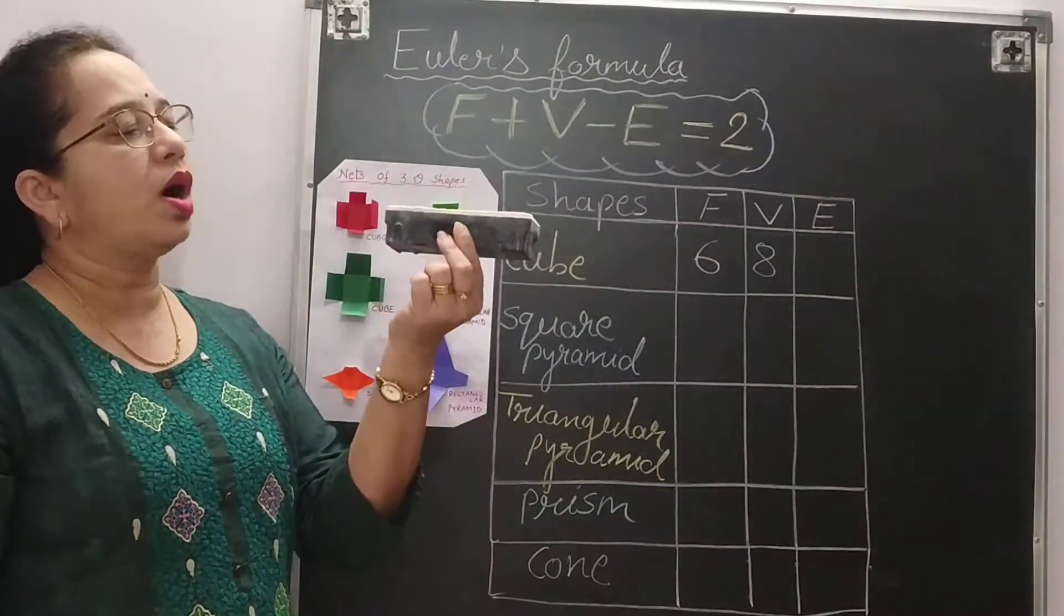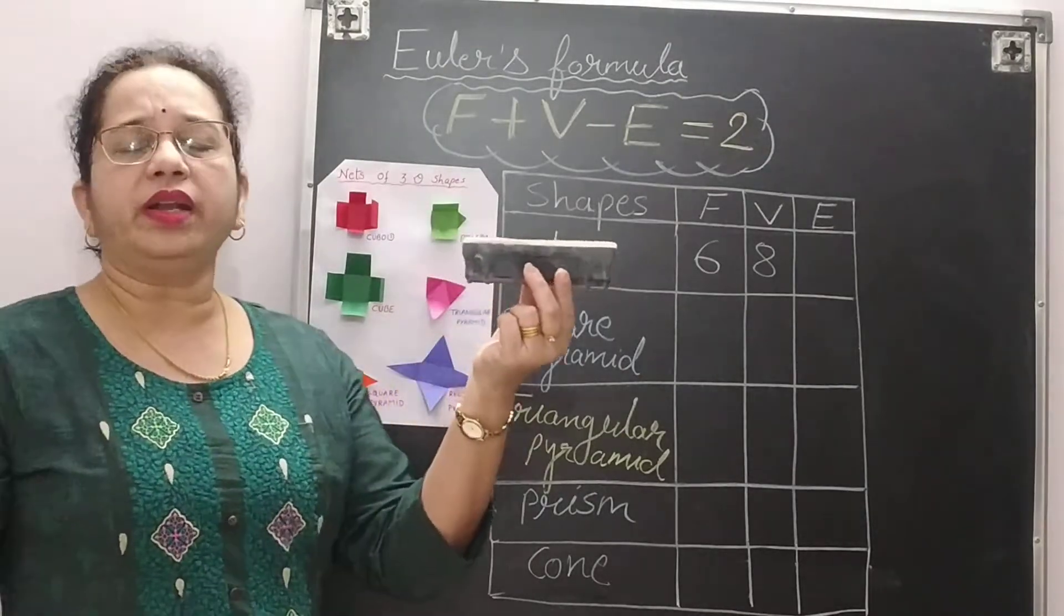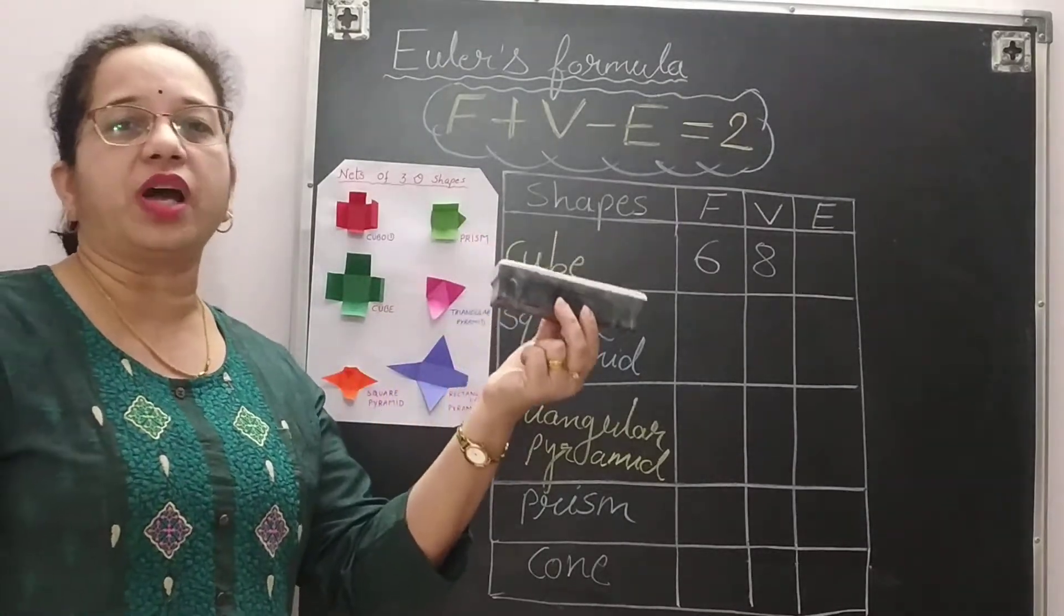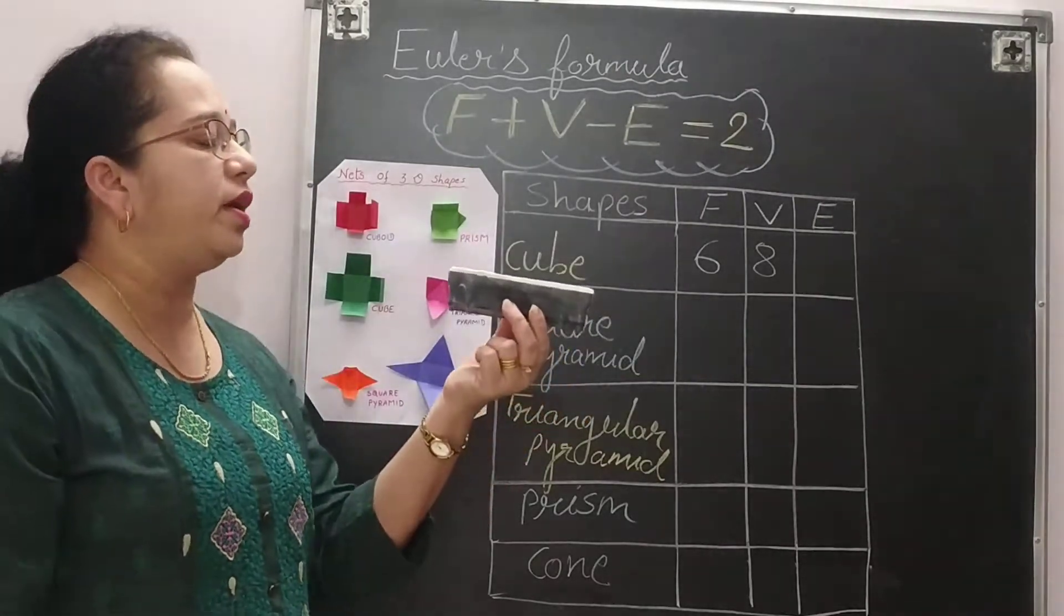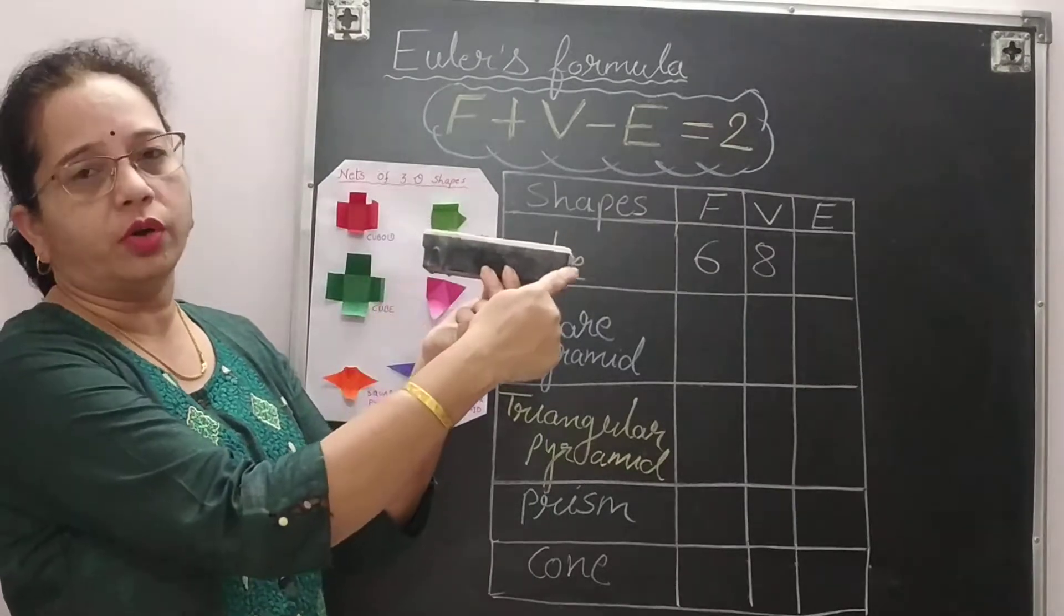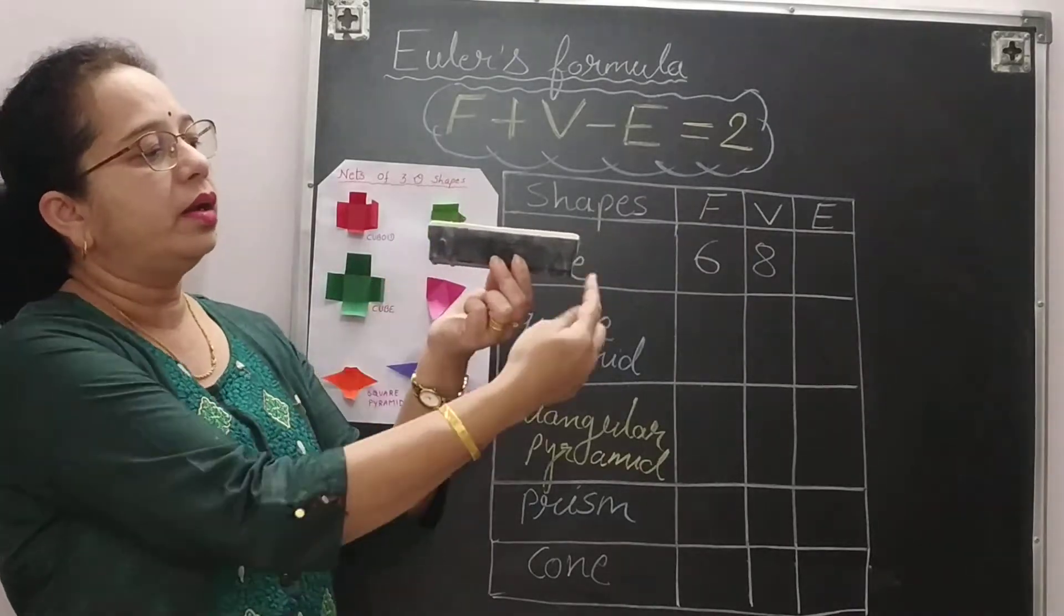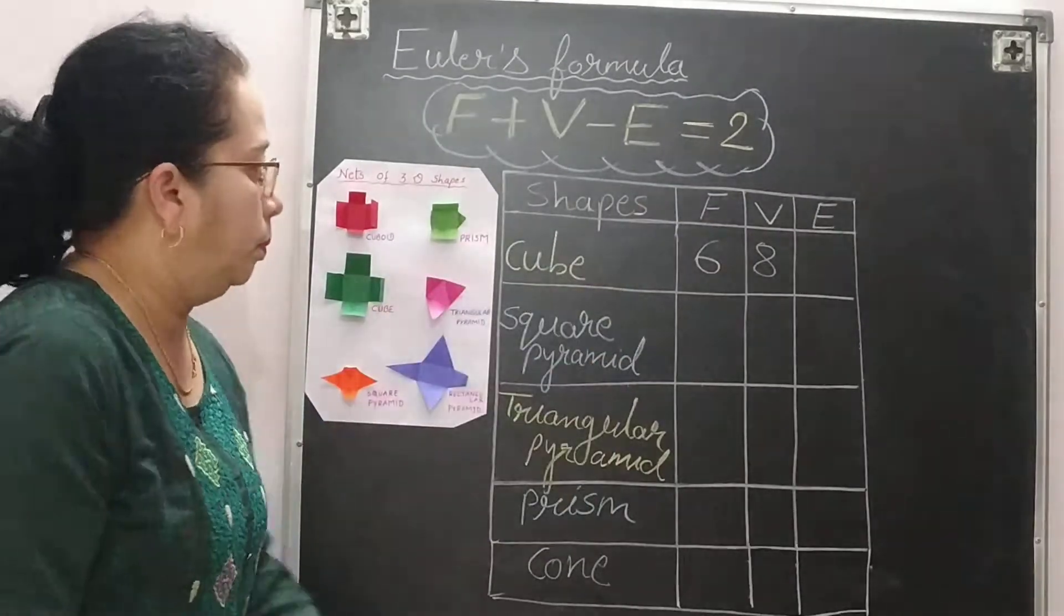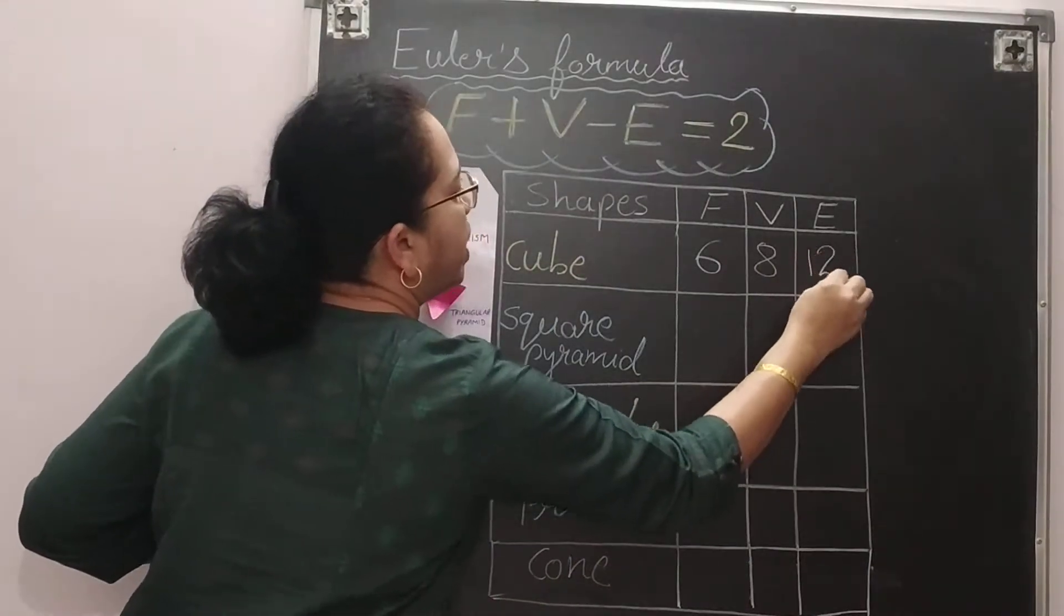Now edges, how to count the edges. You can take eraser or you can take sharpener in your hand. Your geometry box also you can keep it in your hand and find out. Four edges: 1, 2, 3, 4. Similarly 4 at the back. 4 plus 4, then 8, 9, 10, 11, 12. So a cube or cuboid has 12 edges.